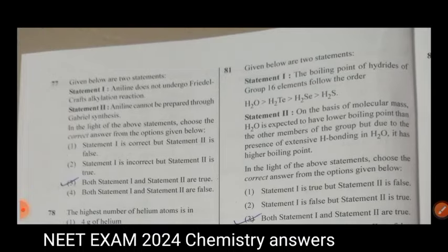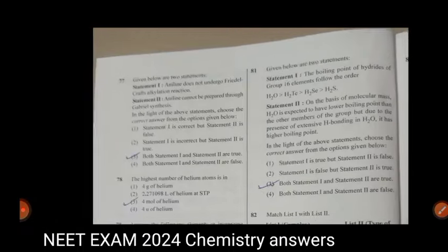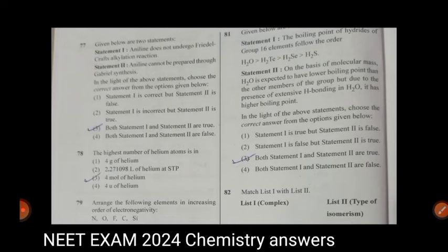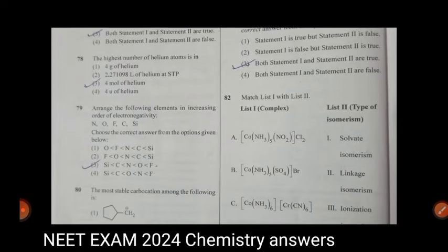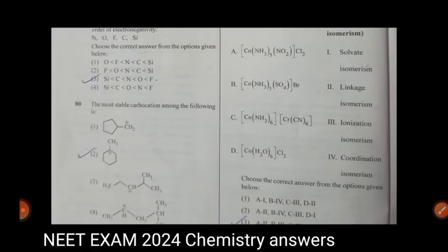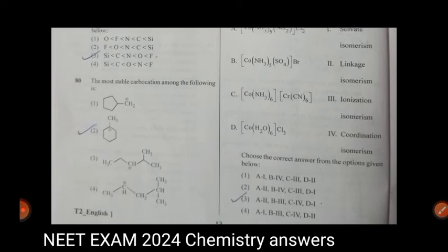Given below are two statements, question 81. Here answer is both statement one and two are true. Third option is correct. Match list one with list two. Here which option is correct? Third one is correct.